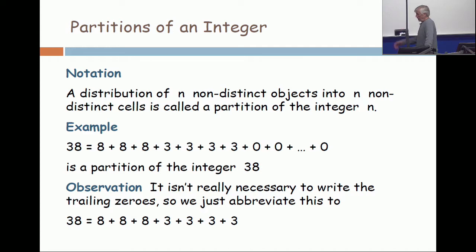I illustrate this with a partition of 38 into 38 parts. Since the parts are non-distinct I might as well write them from big to little. So there's a part of size 8, another part of size 8, another part of size 8, there are three parts of size 8, and there are four parts of size 3. And then there's a whole bunch of parts of size 0.